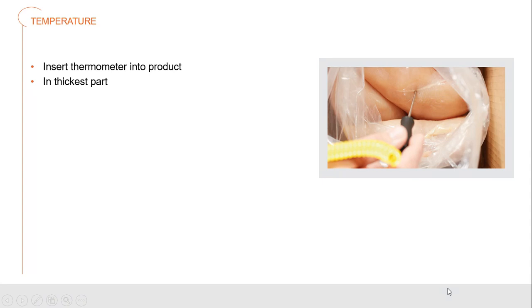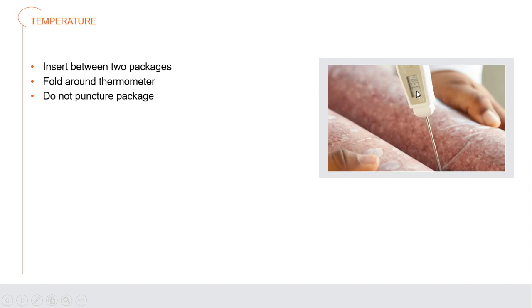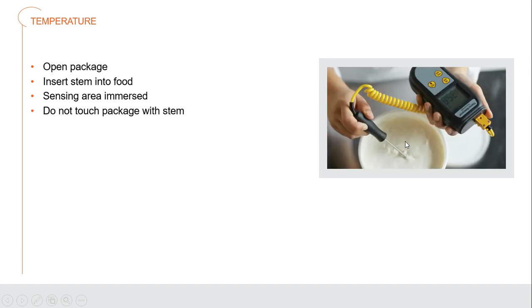For products like chicken breasts, insert the thermometer into the thickest part to verify the correct receiving temperature — 41°F or below. For frozen ground beef, you can't insert a thermometer, but placing it between packages gives an accurate reading. For products like crème fraîche, you may be able to open the product to get an accurate temperature reading.